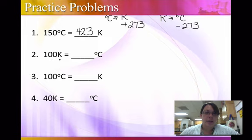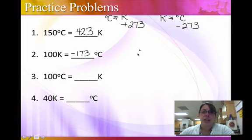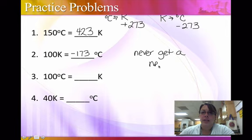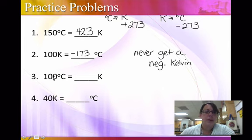Now I'm in Kelvin and I need to go back to Celsius. This is where we subtract. So you would take 100 minus 273, and you're going to get a negative 173 degrees Celsius. A good way to check that you did that correctly, remember that you should never get a negative Kelvin. So if you ever get a negative Kelvin, you probably did the conversion backwards.